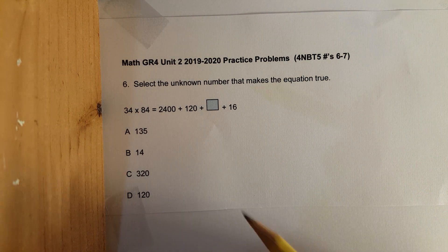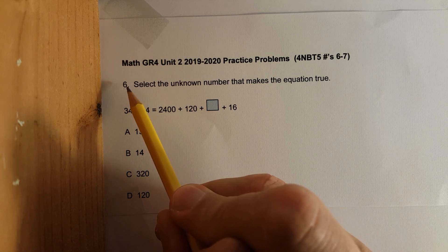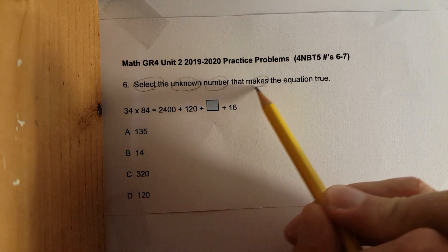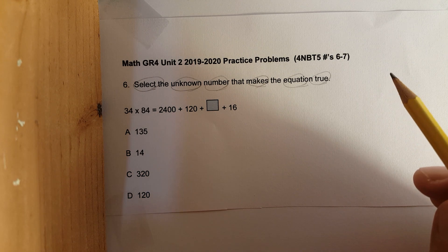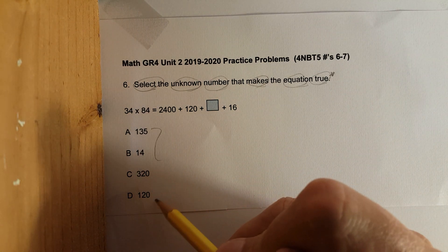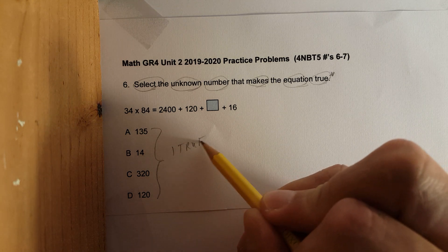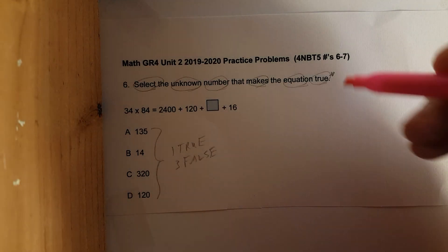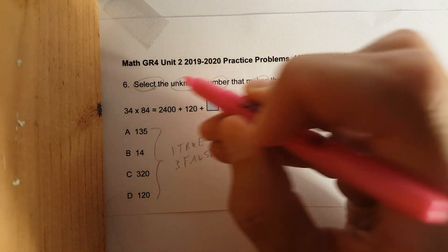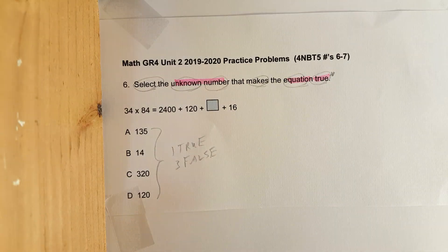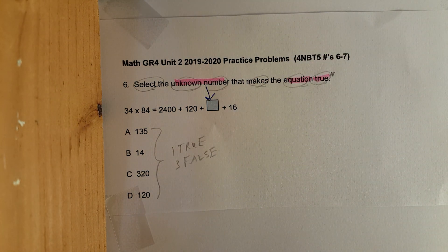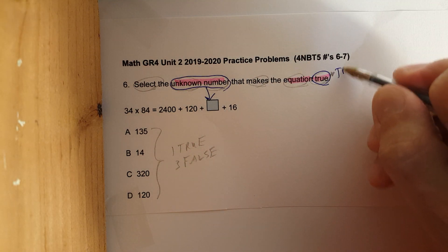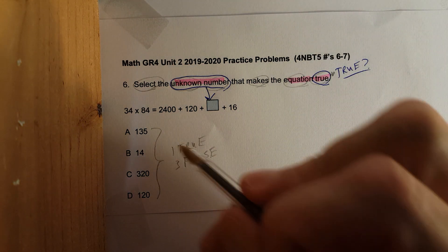Problem six, grade four, unit two practice problems: select the unknown number that makes the equation true. True is very important — one answer is true, three are false. We'll highlight the important words: equation, unknown number. I'm going to circle that unknown number — and remember, true is key.